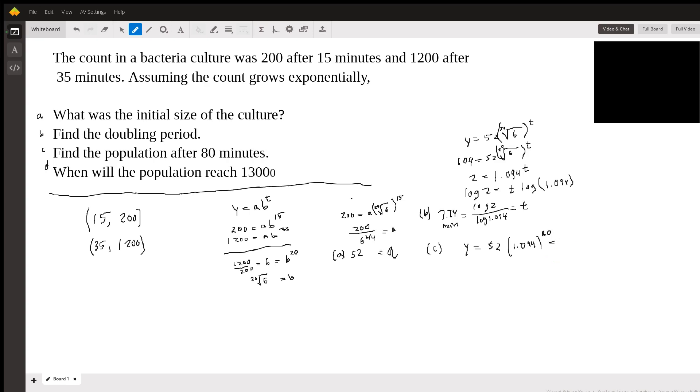So 1.094 raised to the 80th power times 52 is 68,768 after 80 minutes. That seems reasonable. You can see the growth here. We just added another data point here, which would be 80, 68,768, which seems reasonable. This thing is growing very quickly. So that's part C.